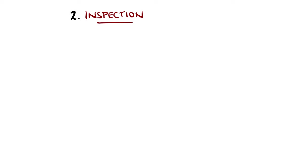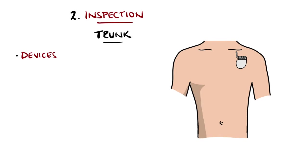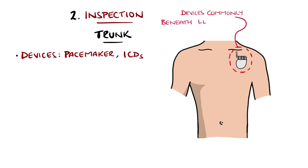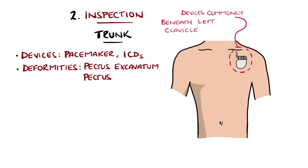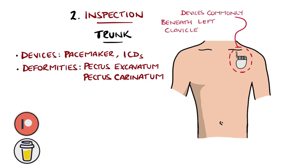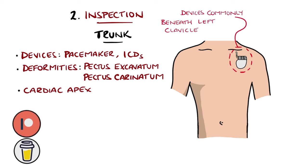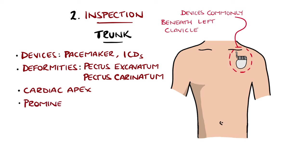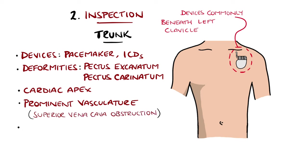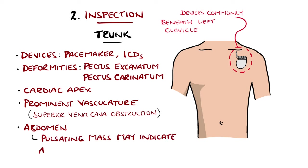Moving down to the trunk, closer inspection can reveal devices such as pacemakers or implantable cardiac defibrillators, typically under the left clavicle. Deformities of the chest, like pectus excavatum or pectus carinatum, can also be seen and are relevant — pectus excavatum can compress the heart and displace the apex beat. In cases of superior vena cava obstruction there can be prominent veins visible on the chest. I also include inspecting the abdomen here for any evidence of a pulsating mass that could indicate an abdominal aortic aneurysm.